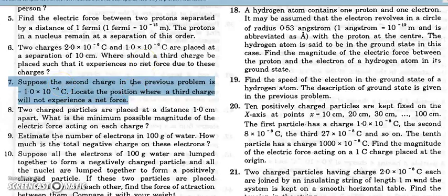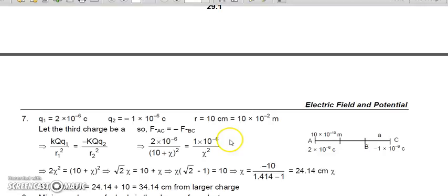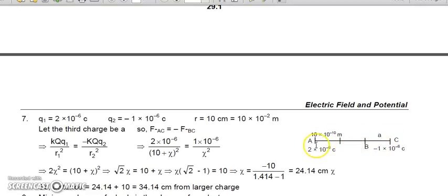The next question is question number 7. In the previous problem, we replace the 1 microcoulomb charge with a negative microcoulomb charge and find the location where the third charge experiences no force. Since q1 and q2 are of opposite sign, their forces must still cancel, so the charge should be placed on one side of both charges, nearer to the smaller charge. We place the new charge near the minus 1 microcoulomb charge. Let the distance from it be x, and the distance from the other charge be x plus 10 centimeters.